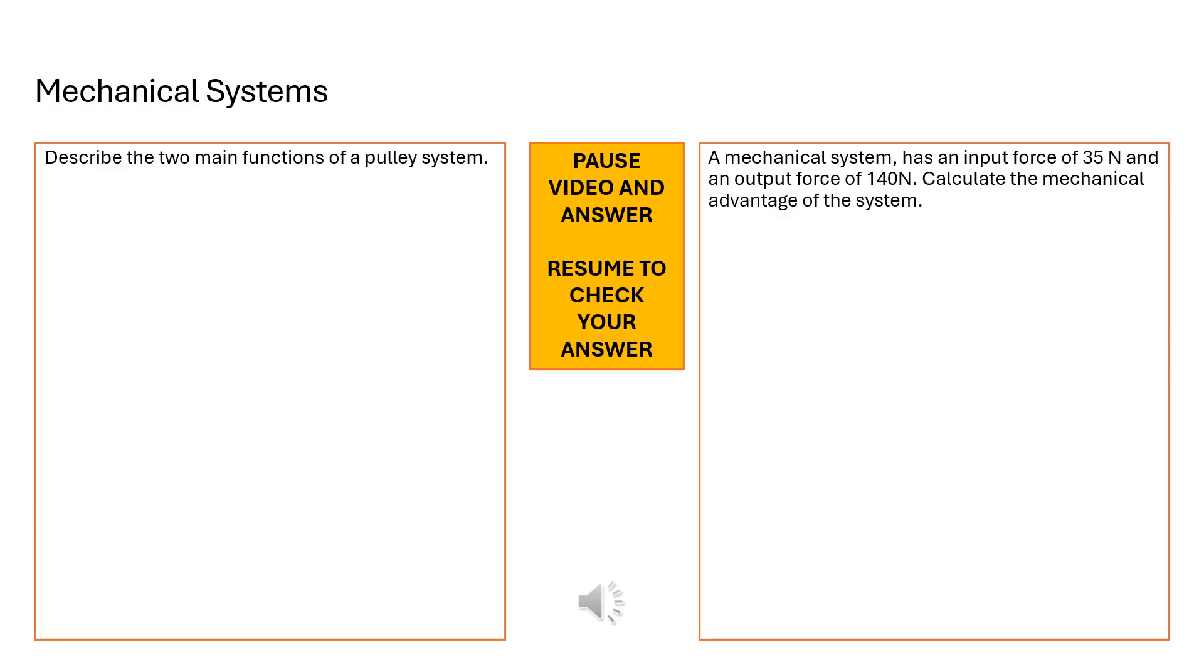Our last set of questions say describe the two main functions of a pulley system. A mechanical system has an input force of 35N and an output force of 140N. Calculate the mechanical advantage of the system. Again at this point I would like you to pause your video and see how you get on with these questions.